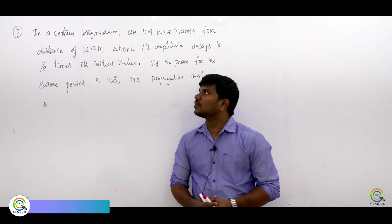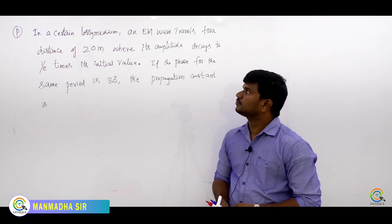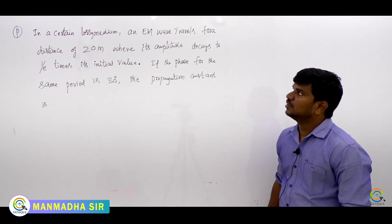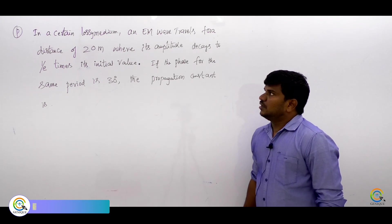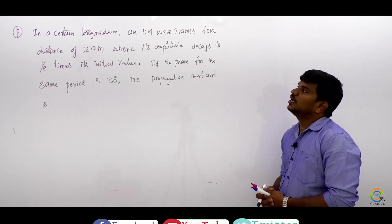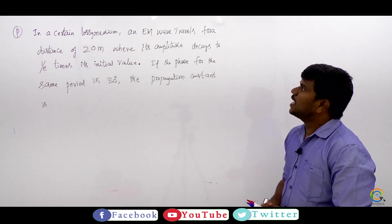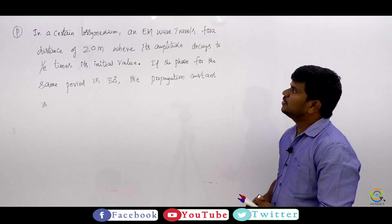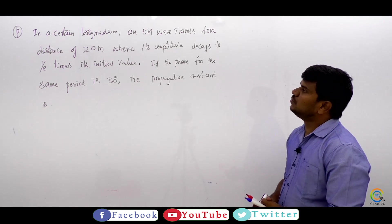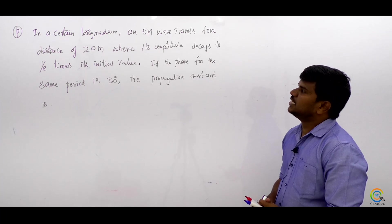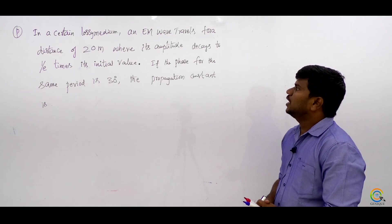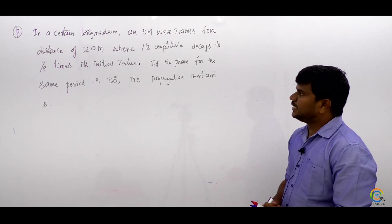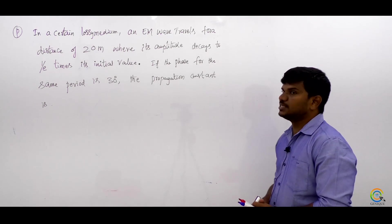Welcome to Janik. Here is the question: In a certain lossy medium, an EM wave travels for a distance of 20 meters where its amplitude decays to 1 by E times its initial value. If the phase for the same period is 30 degrees, then the propagation constant is?